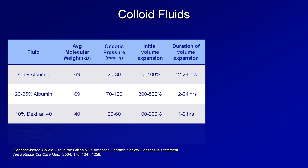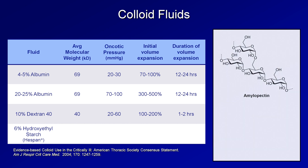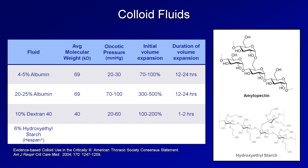The last colloid is hydroxyethyl starch, a derivative of amylopectin — a highly branched polymer of glucose found in plants that structurally resembles glycogen. In order to stabilize and lengthen the half-life of amylopectin in plasma, there is a substitution of hydroxyethyl groups at some of the C2 and C6 positions. Different forms of hydroxyethyl starch are distinguished by different average molecular weights, different degree of hydroxyethyl substitution, and different ratios of substitution between the C2 and C6 positions — the hydroxyethyl groups are circled here.